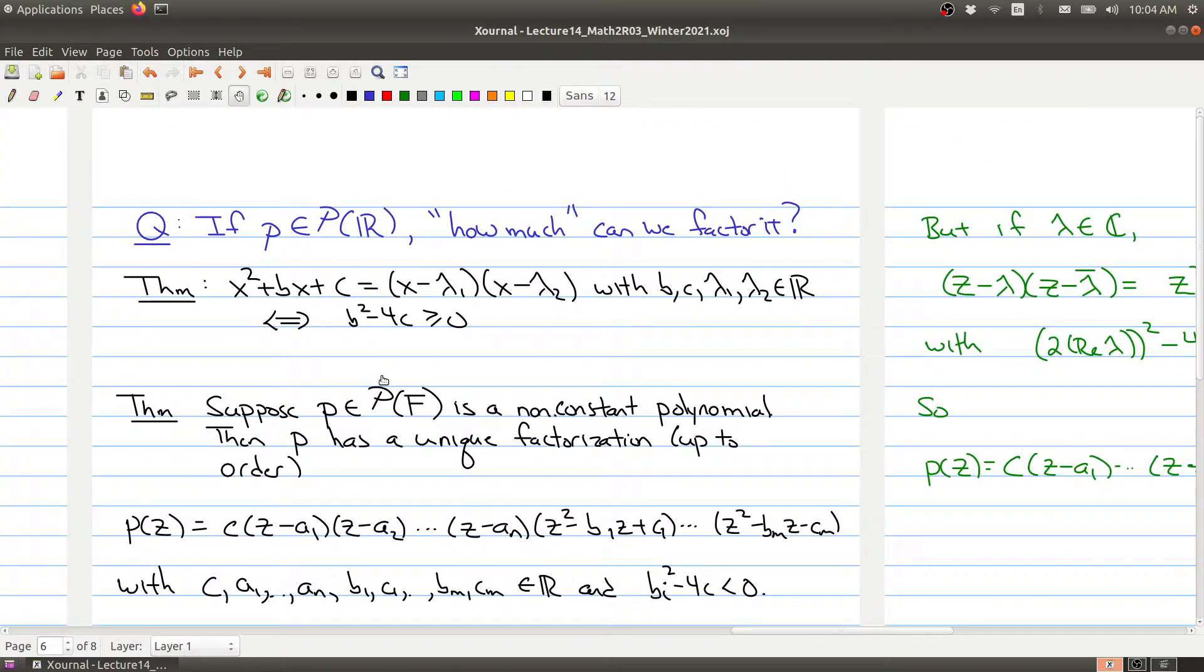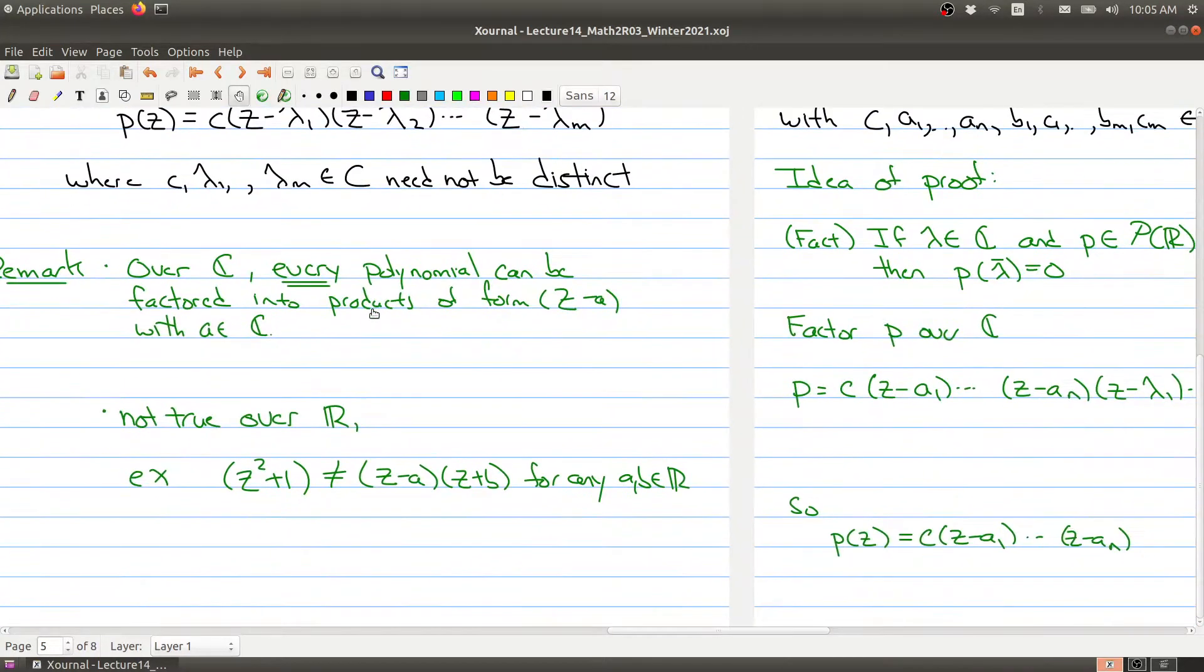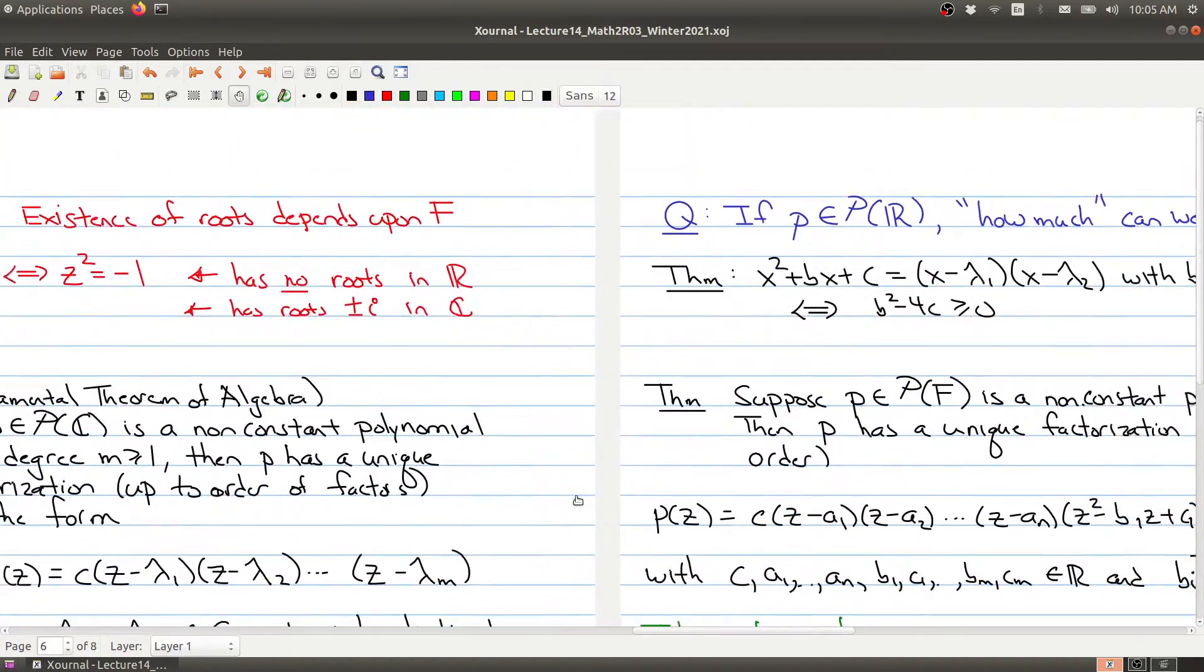So the question is, what if you replace the complex numbers by the real numbers? This leads to the question: if P is a polynomial with real coefficients, how much can we factor it, provided that we want all of our polynomials to also have real coefficients? We can get pretty close, but we can't factor it all the way into linear forms. The example at the bottom shows this is not always possible.